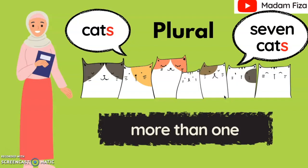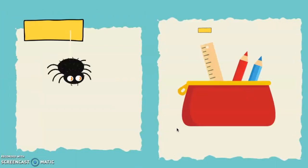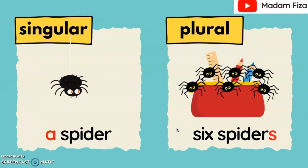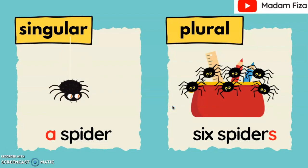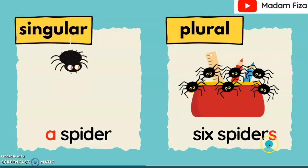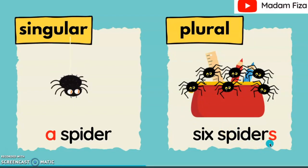Tujuh ekor kucing. Let's look at more examples of singular and plural of the animals. The first example is about the spider. A spider is singular because there's only one spider. Six spiders are plural because there are more than one spider. So, we have to add S at the end of the word 'spider'.